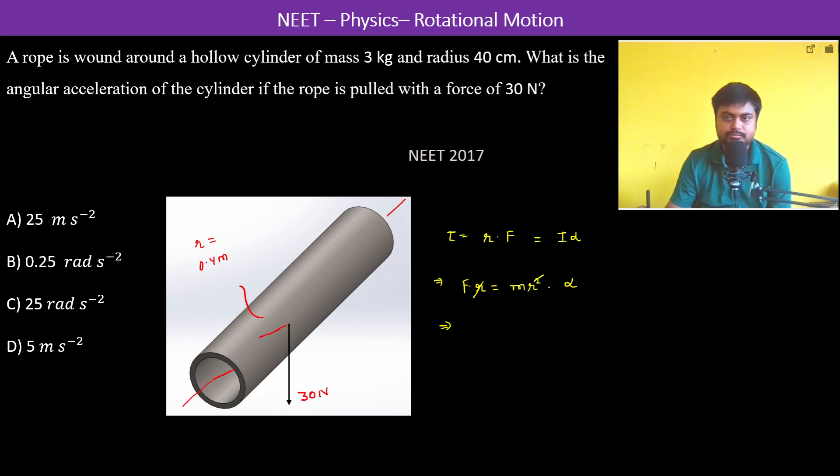Which is equal to 30 newtons divided by mass is 3 kg, radius is 0.4 meters. So meter is gone, kg is gone. This is 10 divided by 0.4.